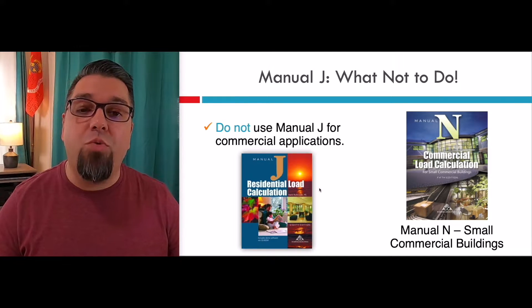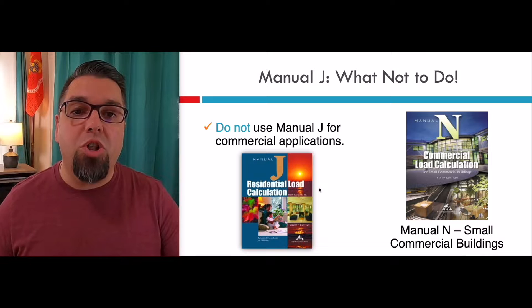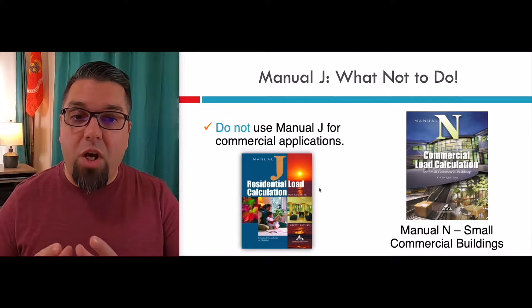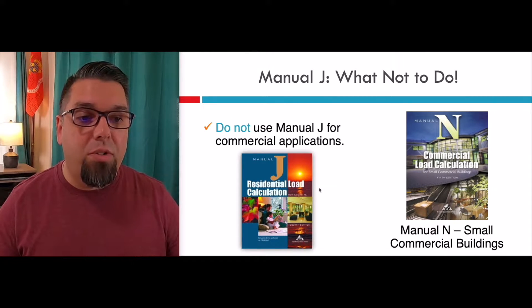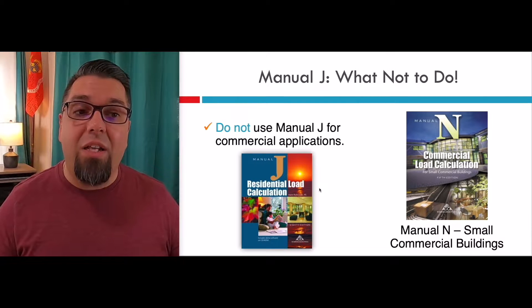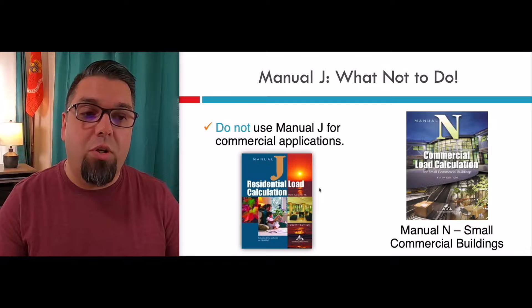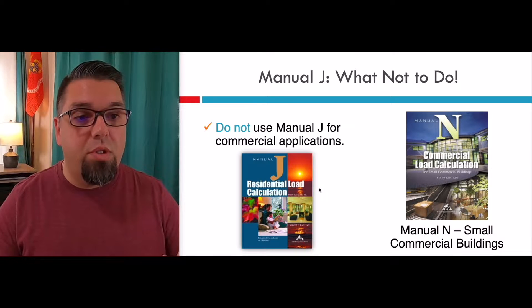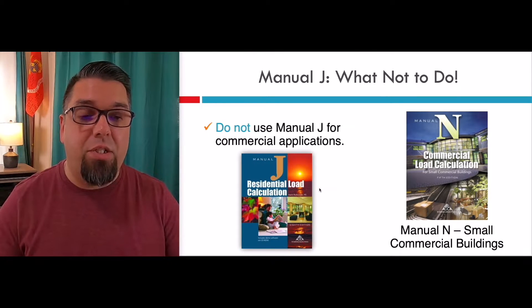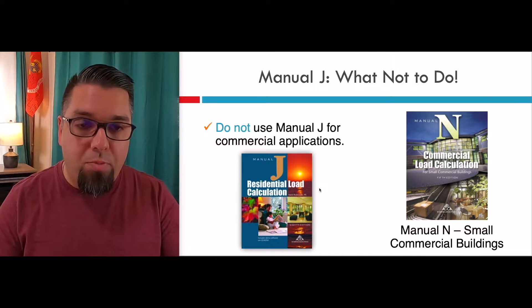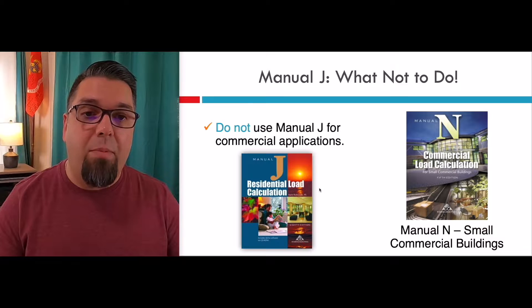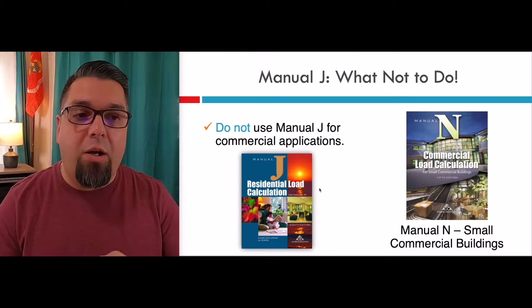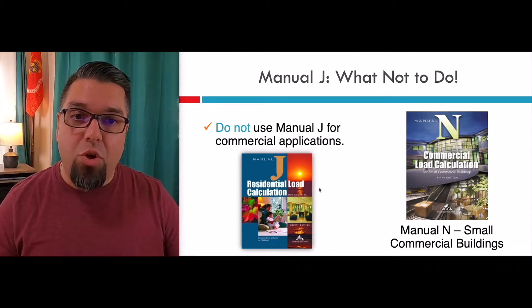First item, right off the bat: we do not use Manual J for commercial or light commercial applications. If you're going to do commercial applications, whether it's with software or longhand, you're going to use Manual N. Manual N is commercial load calculations — the equivalent for commercial loads. This covers everything from IT rooms to kitchens, restaurants, and schools. All of that runs through Manual N. Don't use Manual J — we're not going to account for things like lighting or occupancy the same way as Manual J.